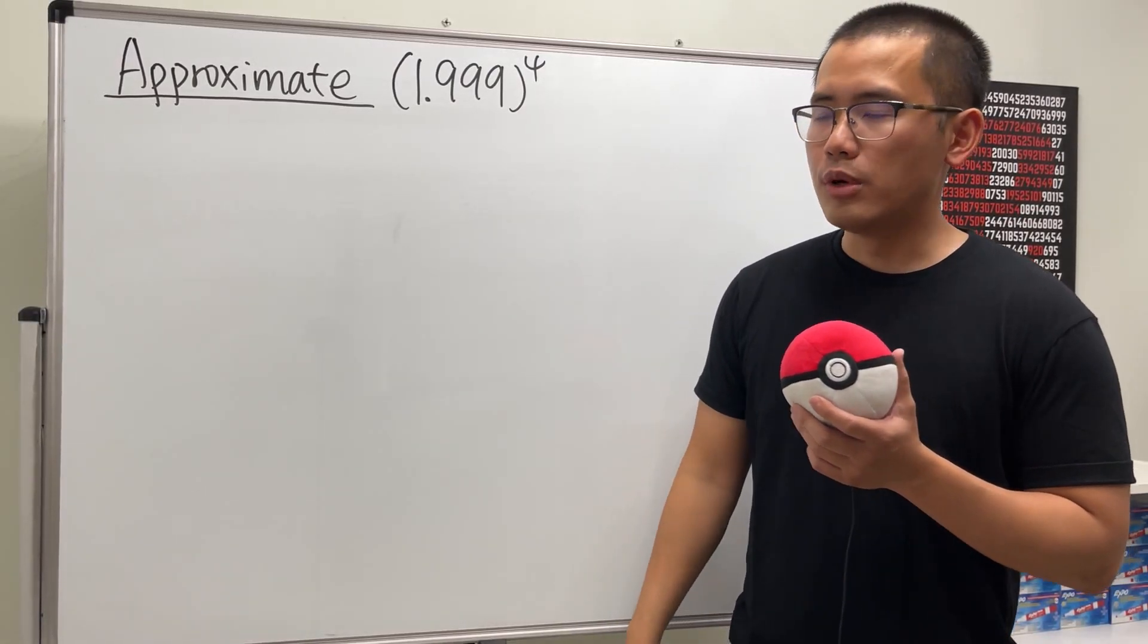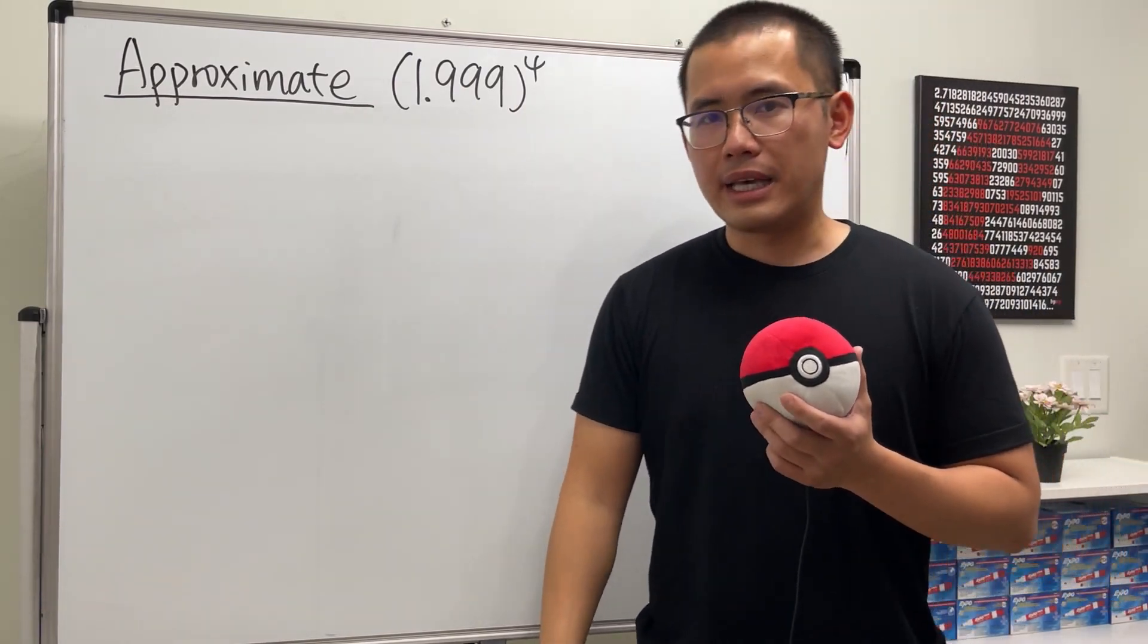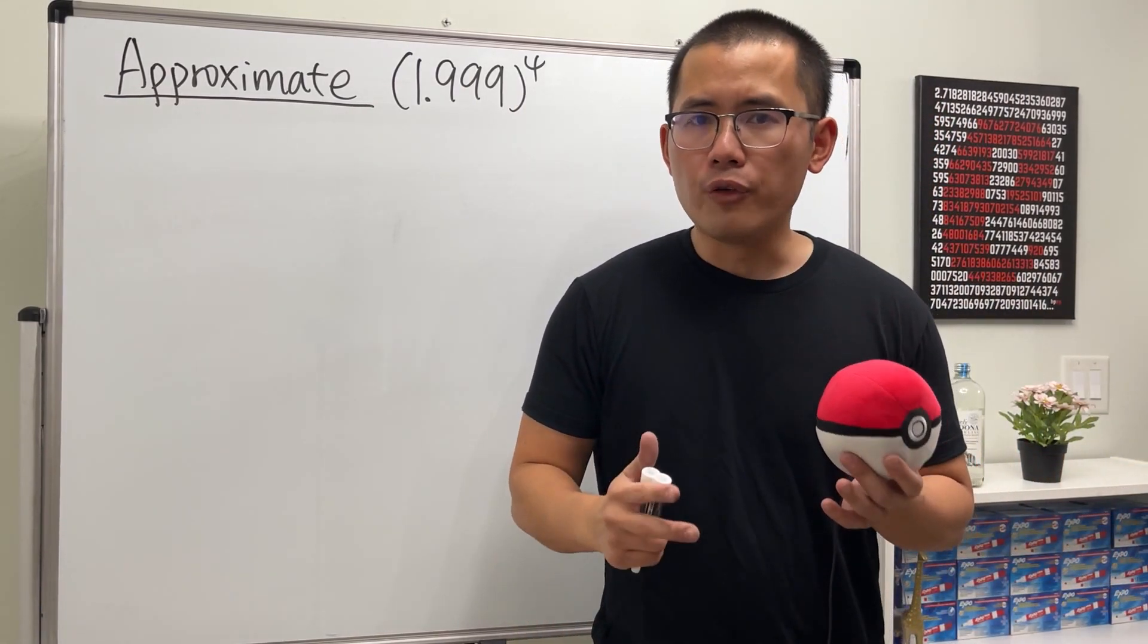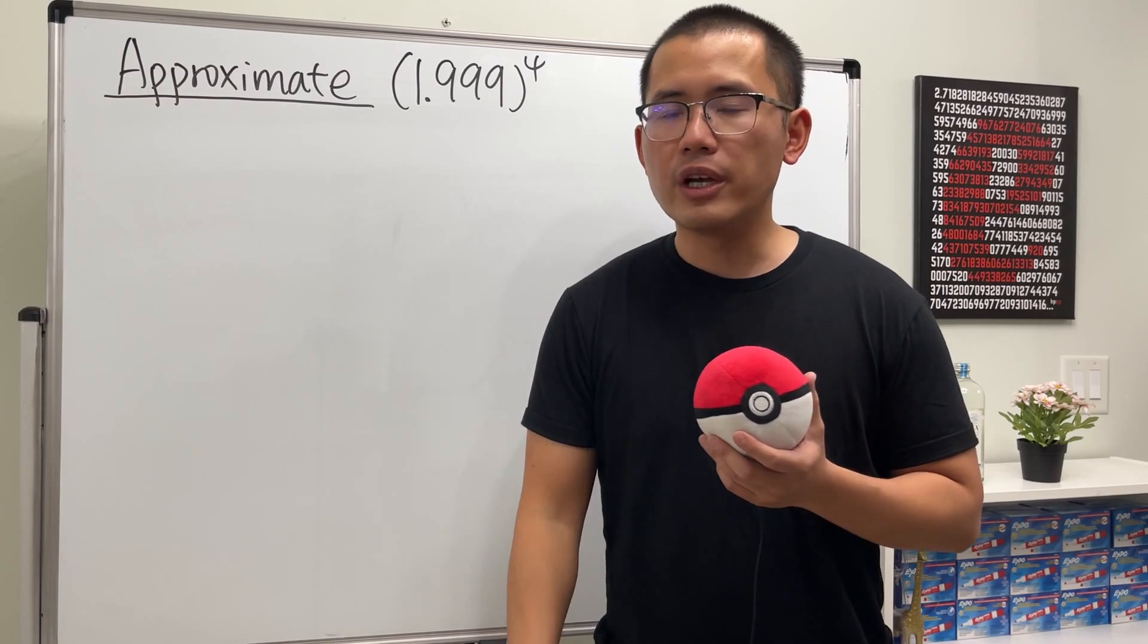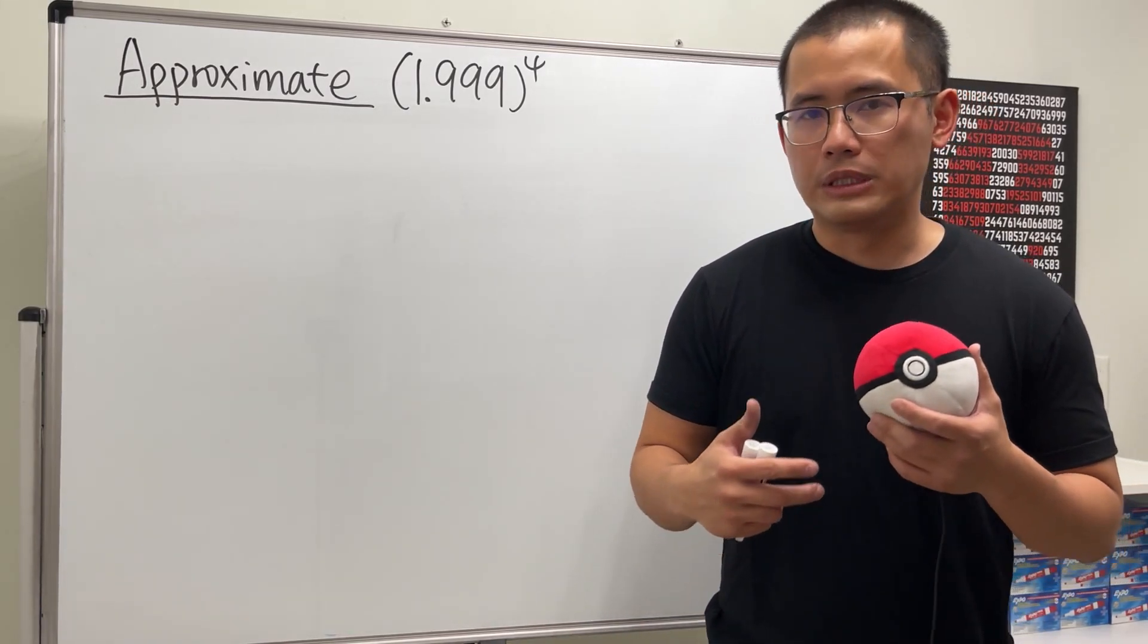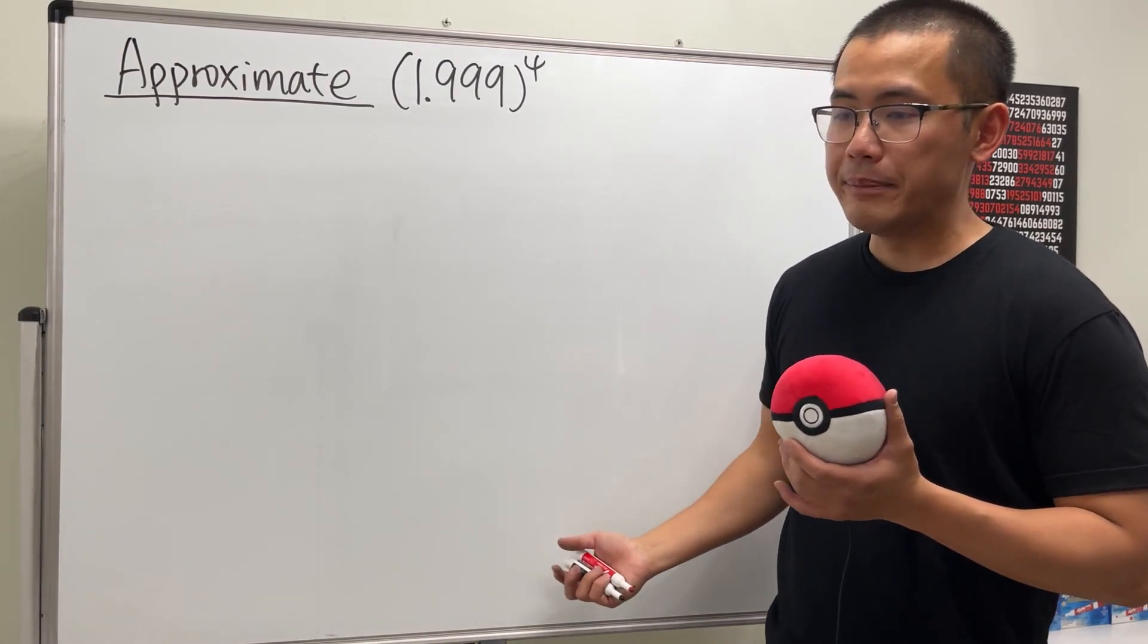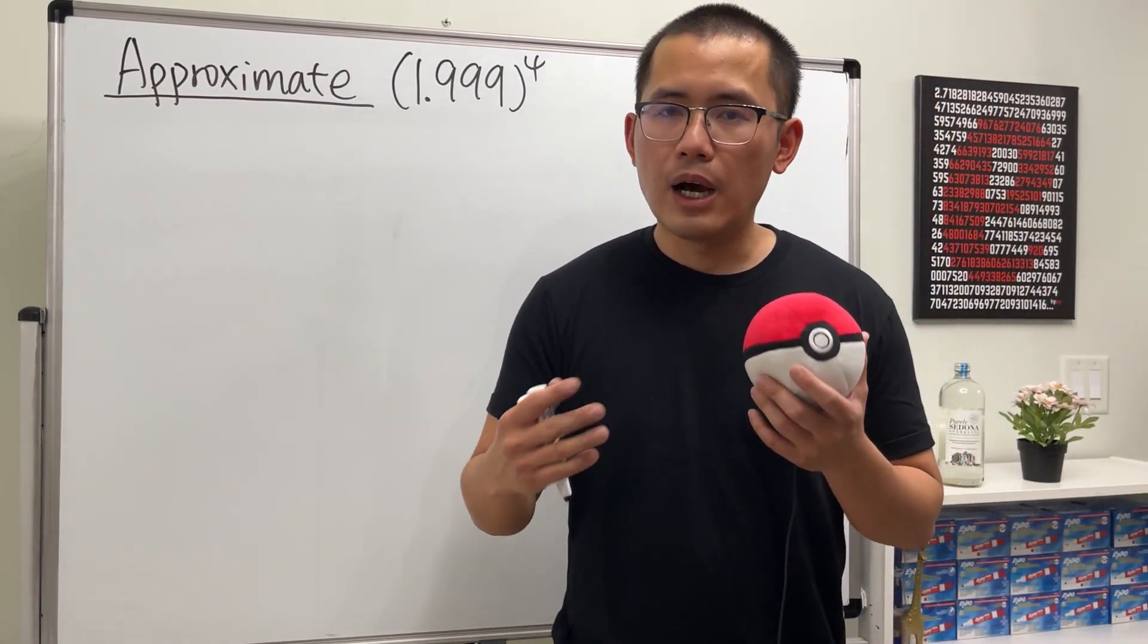I'm going to show you two typical ways to approximate 1.999 to the fourth power in Calculus 1. They are both local linear approximation. The first way is linearization, and the second way is to use differentials. They are of the same degree; we will end up with the same answer. It just depends on how you want to write out your steps.